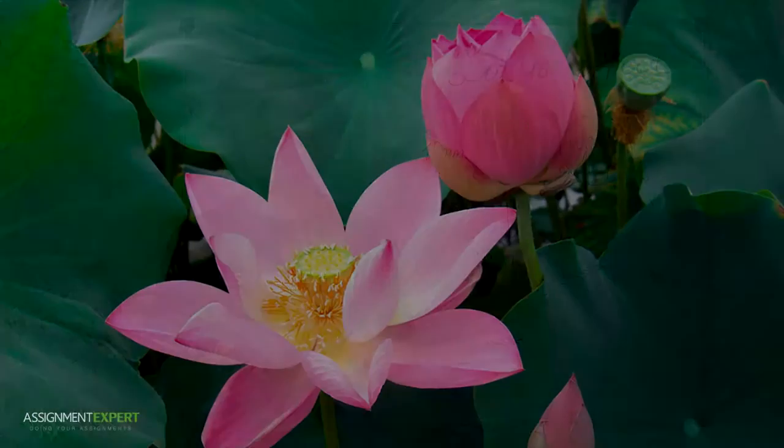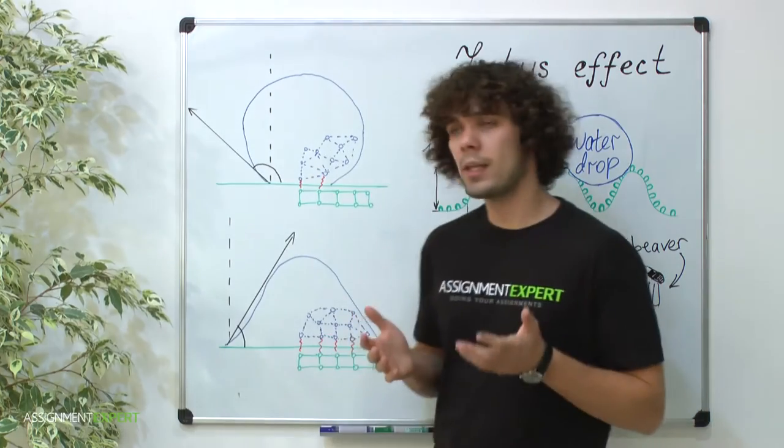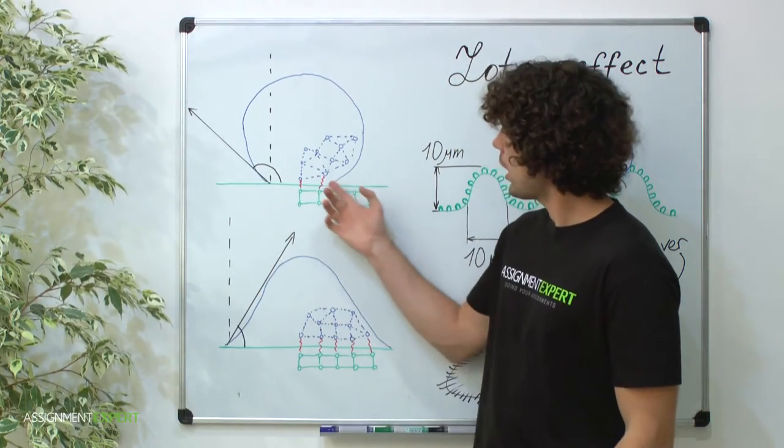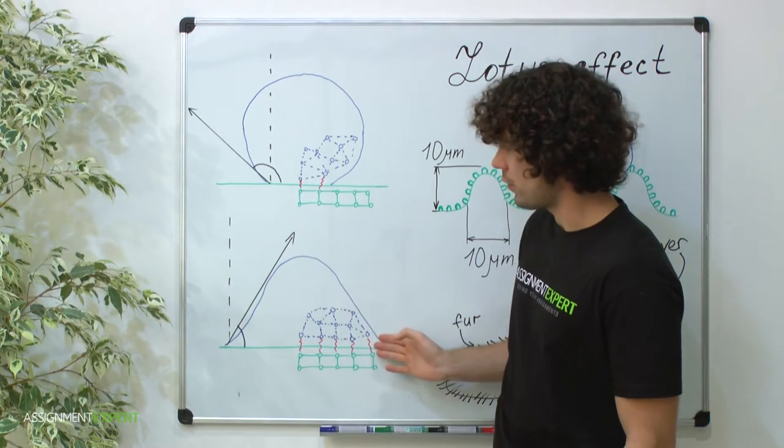So why are lotus petals always clean, even in the muddy surroundings? Well, a drop of any liquid on the solid surface either adapts spherical shape or eventually spreads across the surface.